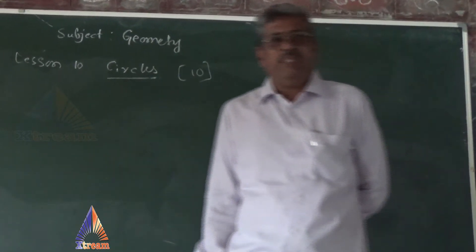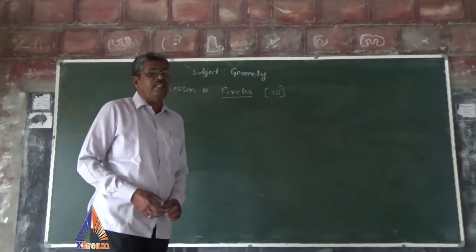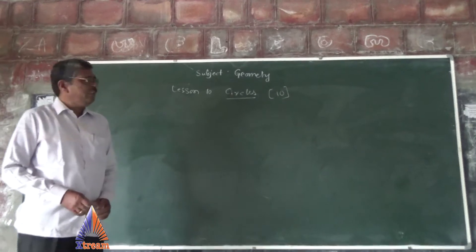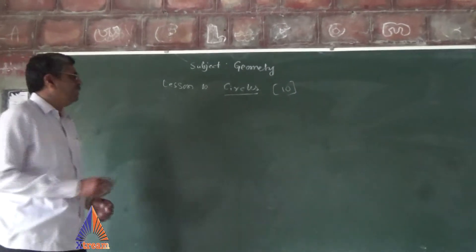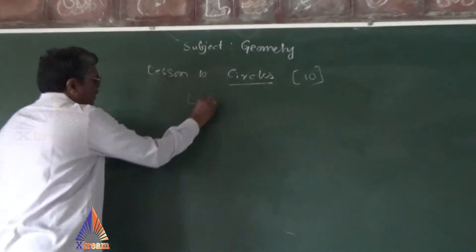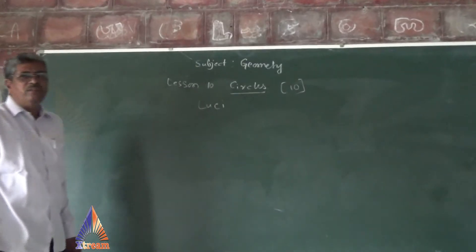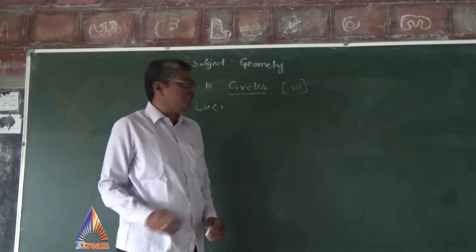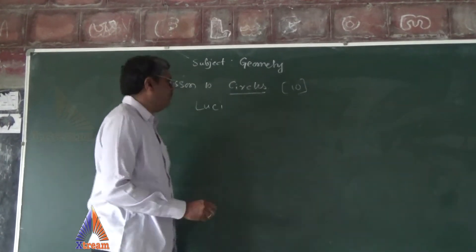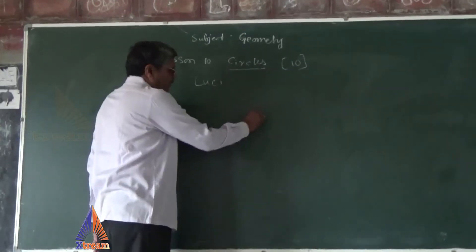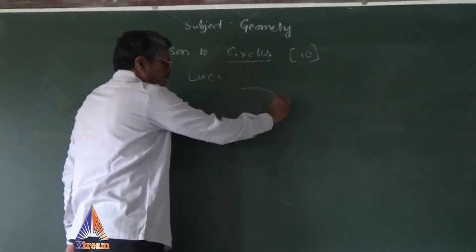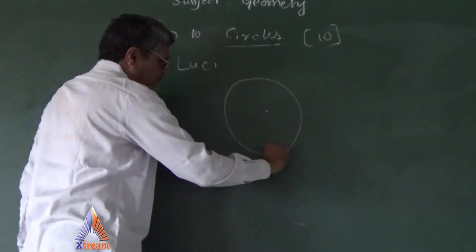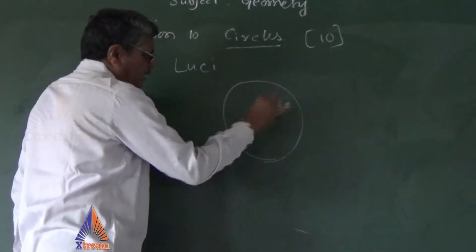All of you were studying about the circle in 8th and 9th standard. What is a circle? A circle is also called a locus. Locus means the locus of a point which moves at a constant distance from a fixed point. If you move at a constant distance from a fixed point, it is called a circle.